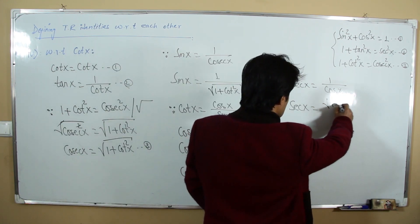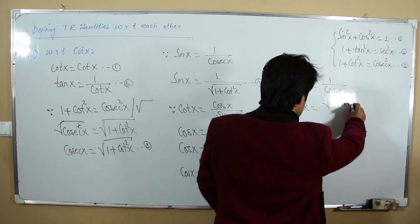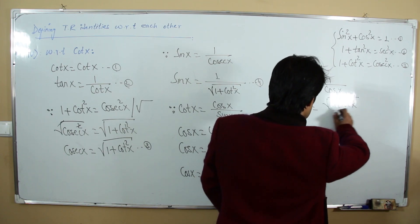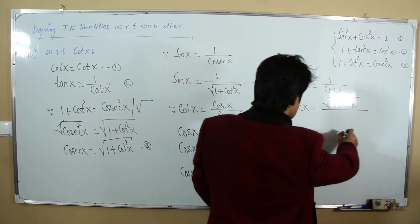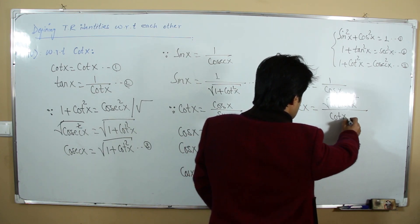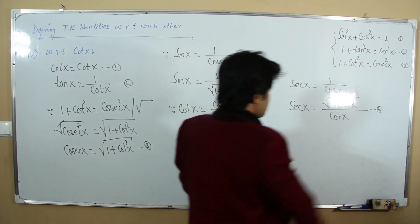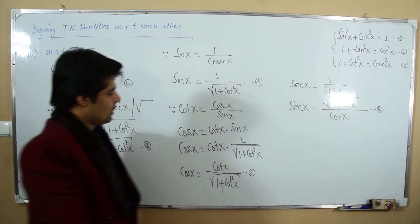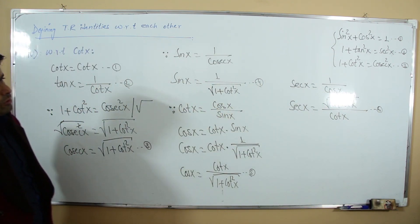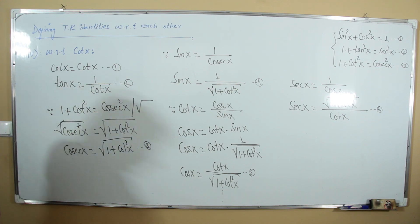Secant is the reciprocal of cosine, so sec x = √(1 + cot²x) / cot x. This is our sixth relation. We have now proved 24 relations.